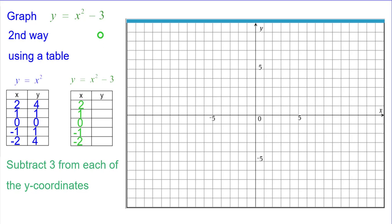We're going to subtract 3 from each of the y coordinates, because it's right there in the equation. So 4 minus 3 will be 1, and that point 2 comma 1 is plotted there. 1 minus 3 is negative 2, 1 comma negative 2 is plotted. 0 minus 3, 0 negative 3. 1 minus 3 back to negative 2, negative 1 negative 2. And 4 minus 3 is 1, negative 2 comma 1.